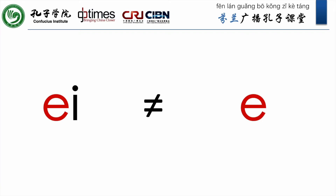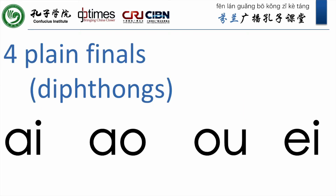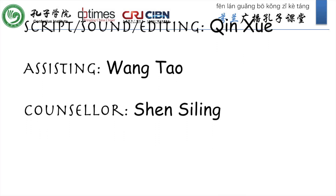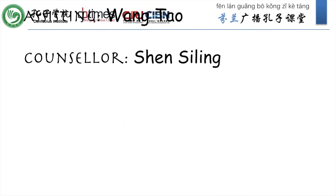In conclusion, today we have learned four plain finals with diphthongs: ai, ao, ou, ei. And because of the variations in sound values, these diphthongs are best learned as units. That is all for this class. See you next time. Bye bye.